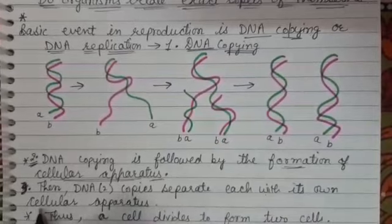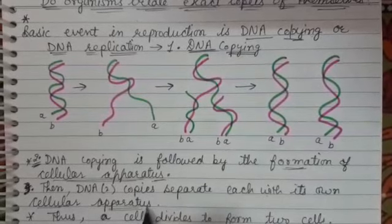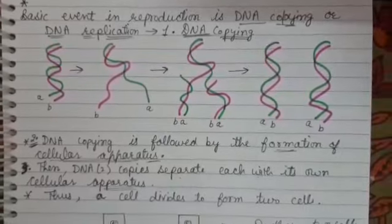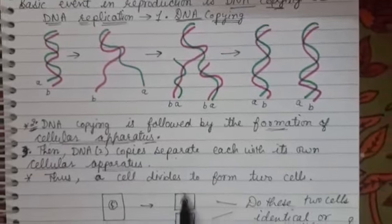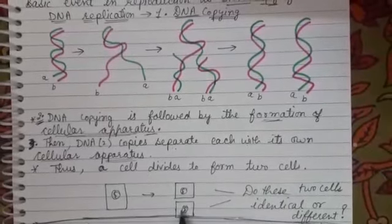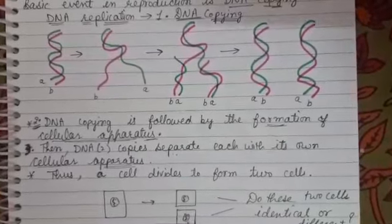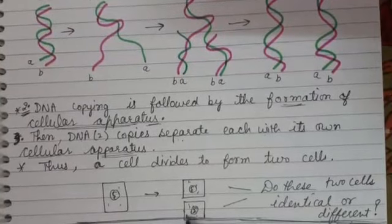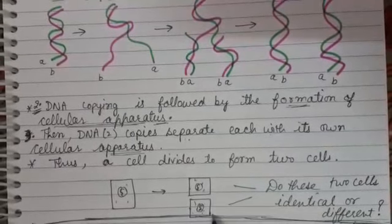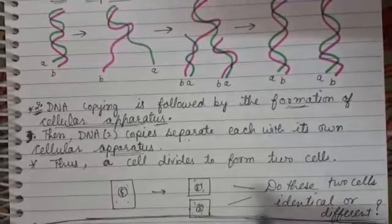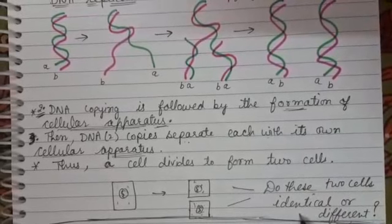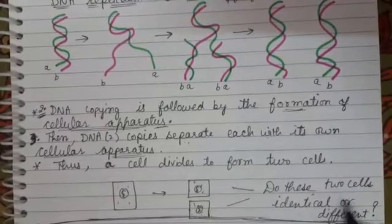Then these two DNA copies separate, and the cellular apparatus also separate. In this way, a cell divides to form two cells. First DNA separates, and then cellular apparatus also separates, and two cells are formed. So the question arises: do these two cells identical or different?